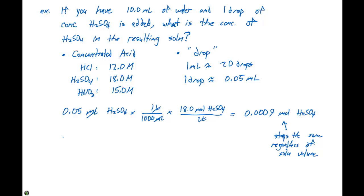If we have 0.0009 moles of H2SO4 divided by, and we can say this is our concentration, 0.0105 liters, which this volume is the 10.0 milliliters plus one drop.